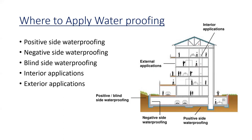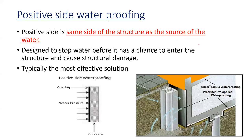Positive, negative, and blind side waterproofing are discussed in the context of substructures, while interior and exterior applications are for superstructures. The positive side is the same side of the structure as the source of water. In this figure, you can see the structure — if the water pressure is coming from one direction, we apply the coating on that same side, avoiding contact at the first stage. The aim is to stop water before it has a chance to enter the structure and cause structural damage. This is typically the most effective solution.